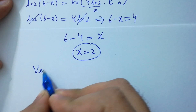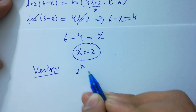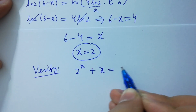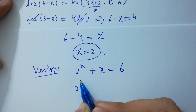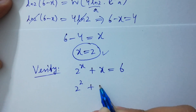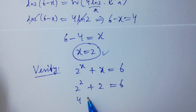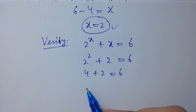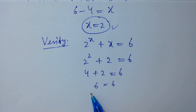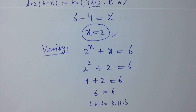Now let's verify: 2 to the power x plus x equals 6. Substituting x equals 2: 2 to the power 2 plus 2 equals 6. That is 4 plus 2 equals 6, which gives 6 equals 6. Left hand side equals right hand side. Verified!